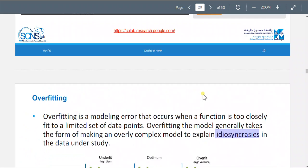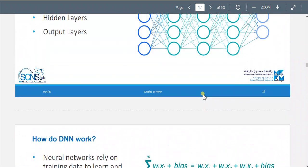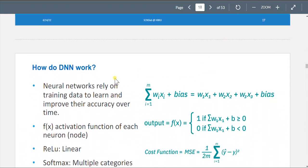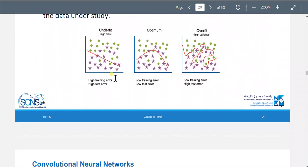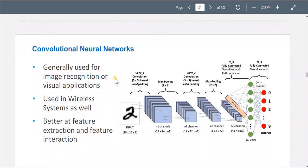Okay, so we are now in convolutional neural networks. Actually this is a continuation, so deep neural networks, convolutional neural networks is actually a type of deep network. Generally used for image recognition or visual applications. Used in wireless systems as well and better at feature extraction and feature interaction.